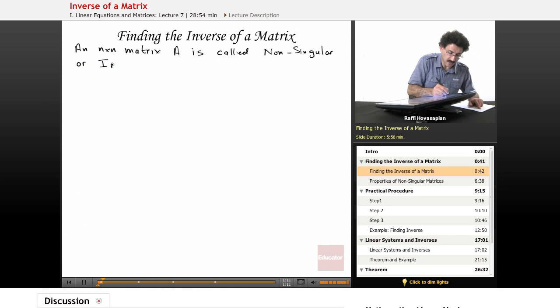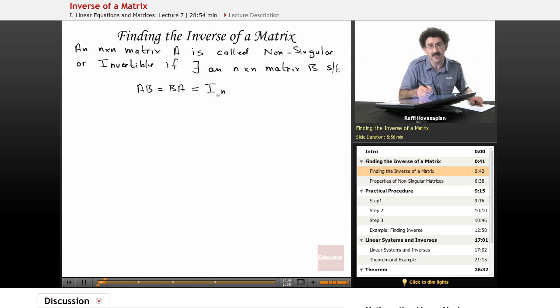or invertible if there exists (and remember, this reverse E means there exists) an n by n matrix B such that A times B equals B times A equals the n by n identity matrix.